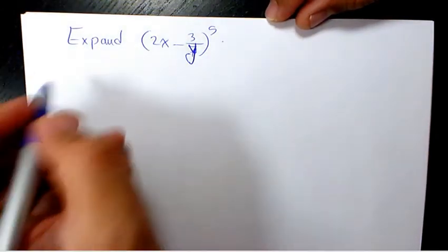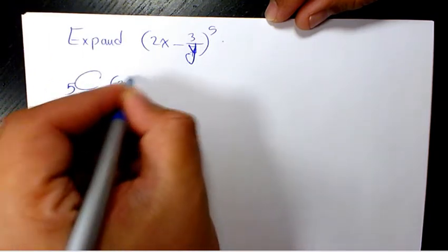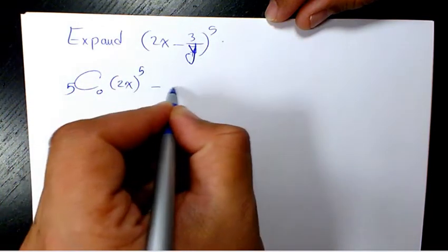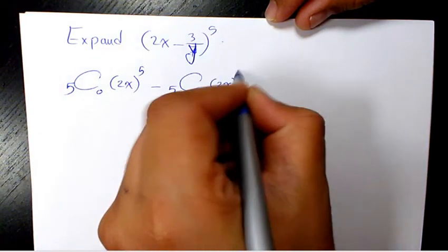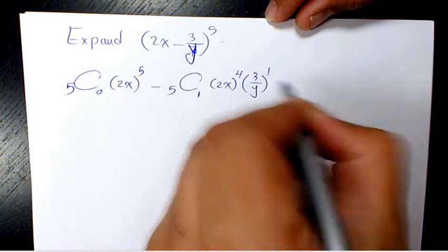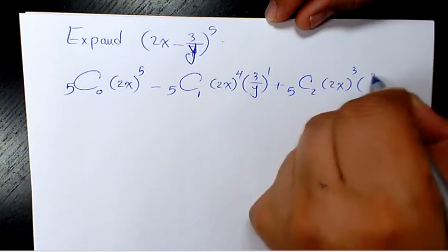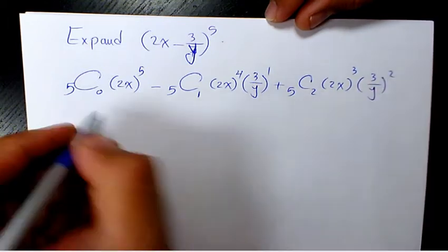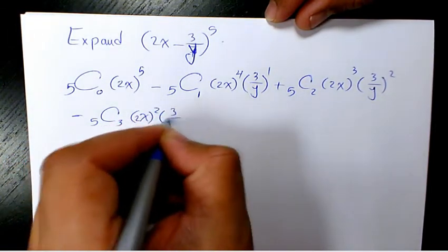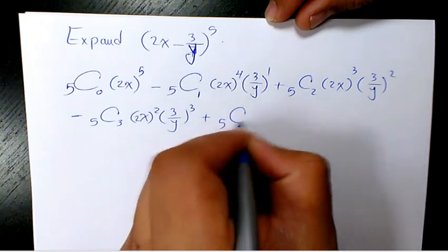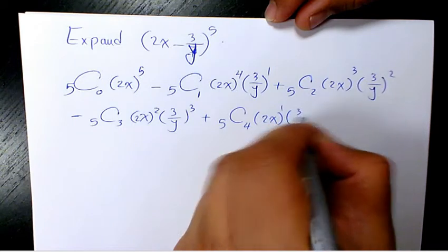When you expand it, we had it in previous videos that we have 5C0(2x)^5 minus 5C1(2x)^4(3/y)^1 plus 5C2(2x)^3(3/y)^2 minus 5C3(2x)^2(3/y)^3 plus 5C4(2x)^1(3/y)^4